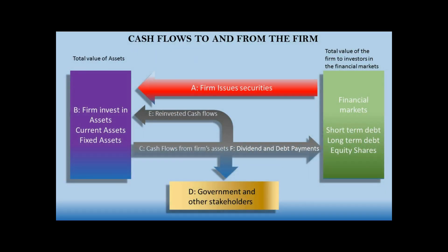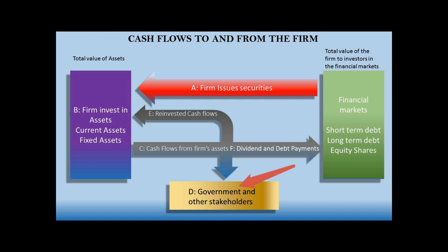An important concept in corporate finance is cash flows to and from the firm. This diagram shows the flow of cash to and from the firm. A firm starts by selling securities in the financial markets; those funds are then invested in the firm's assets — current assets and fixed assets. By running its operations, the firm generates cash flow that goes to the government as taxes, to other stakeholders such as employees, back to the firm as reinvested cash flows, and to shareholders as dividends and to creditors as debt payments.